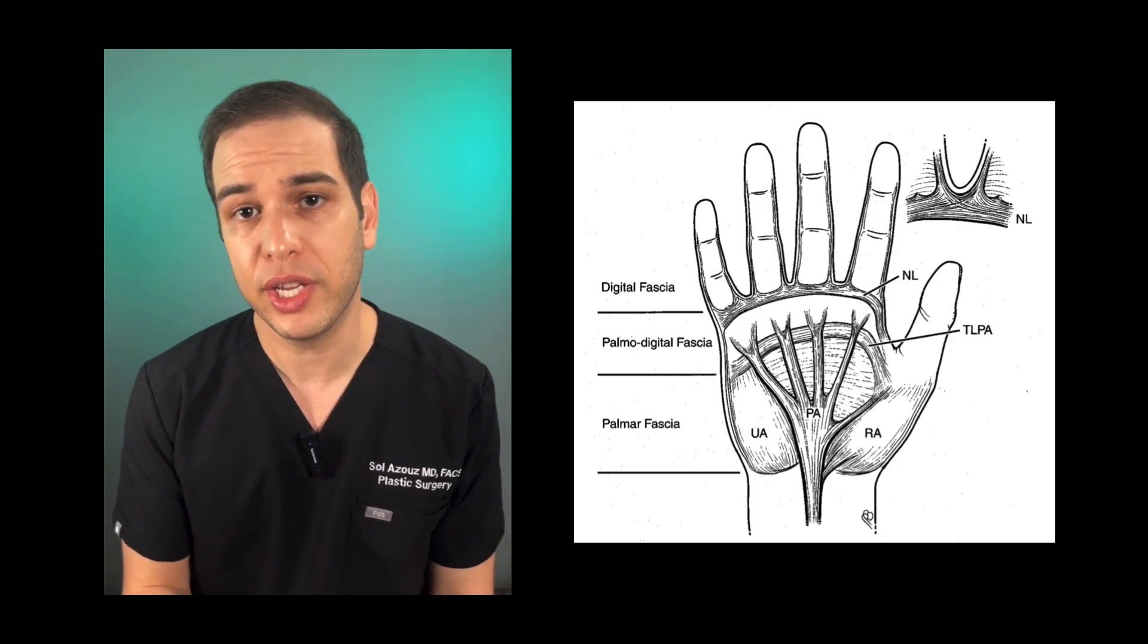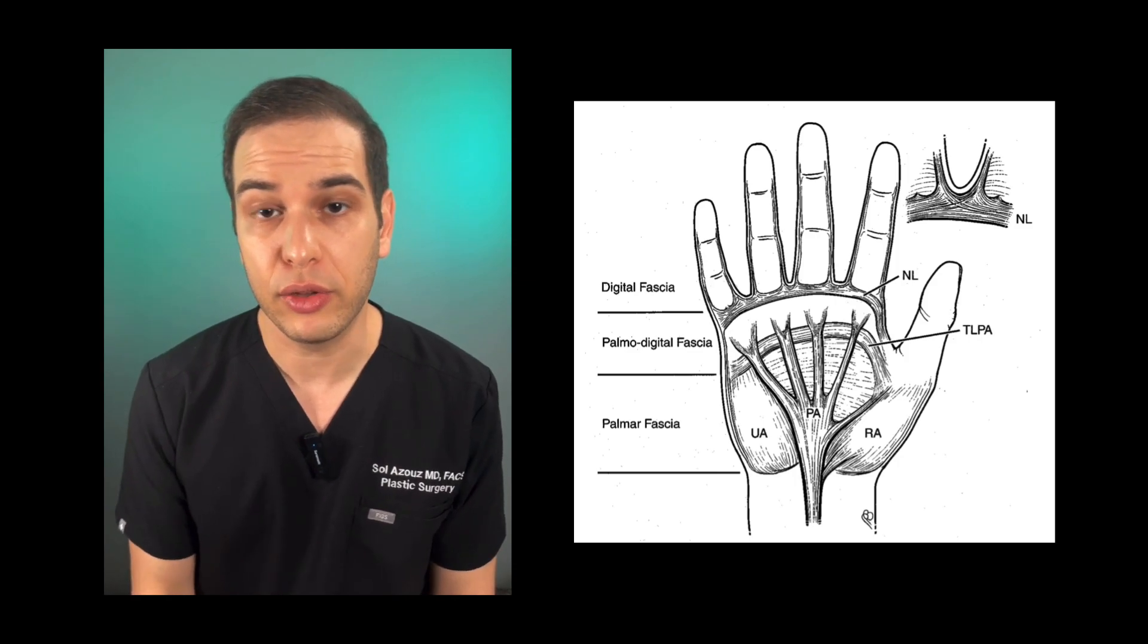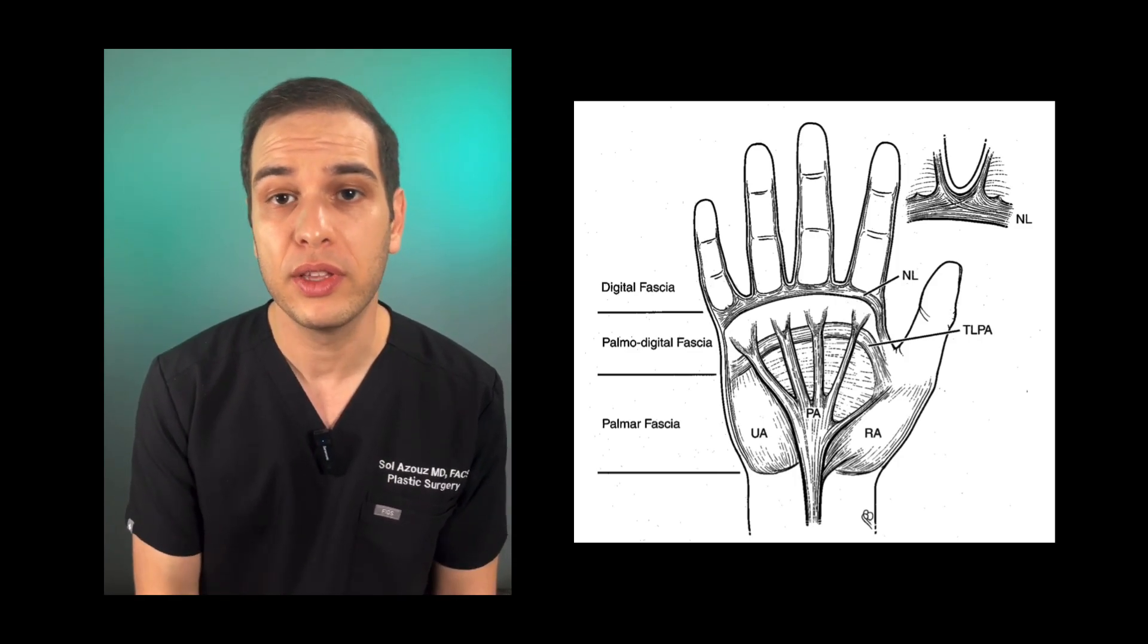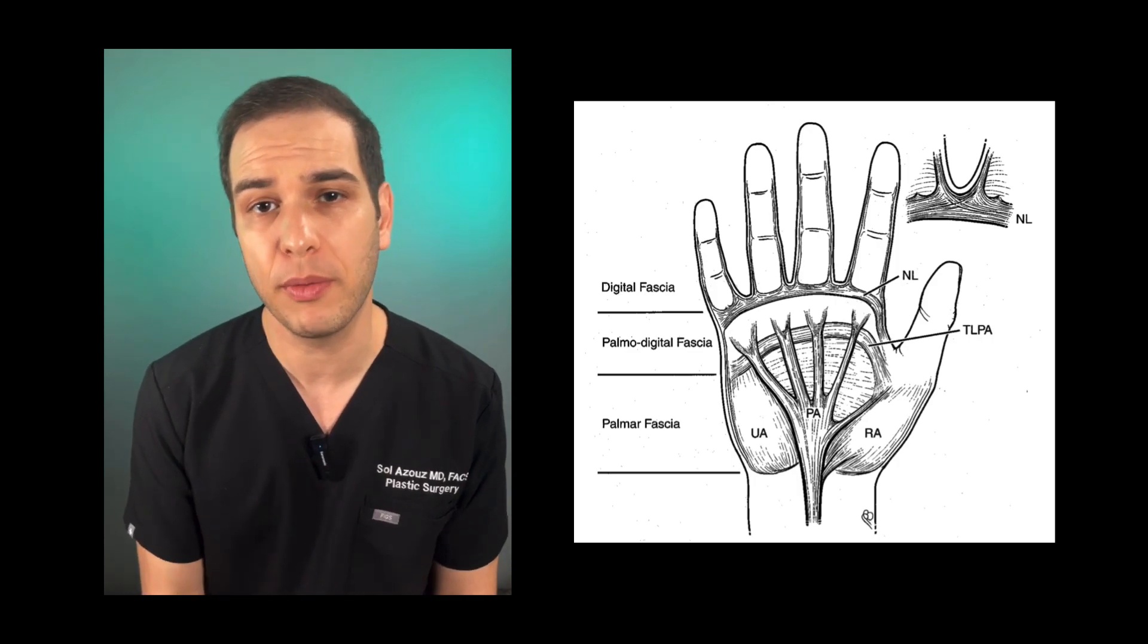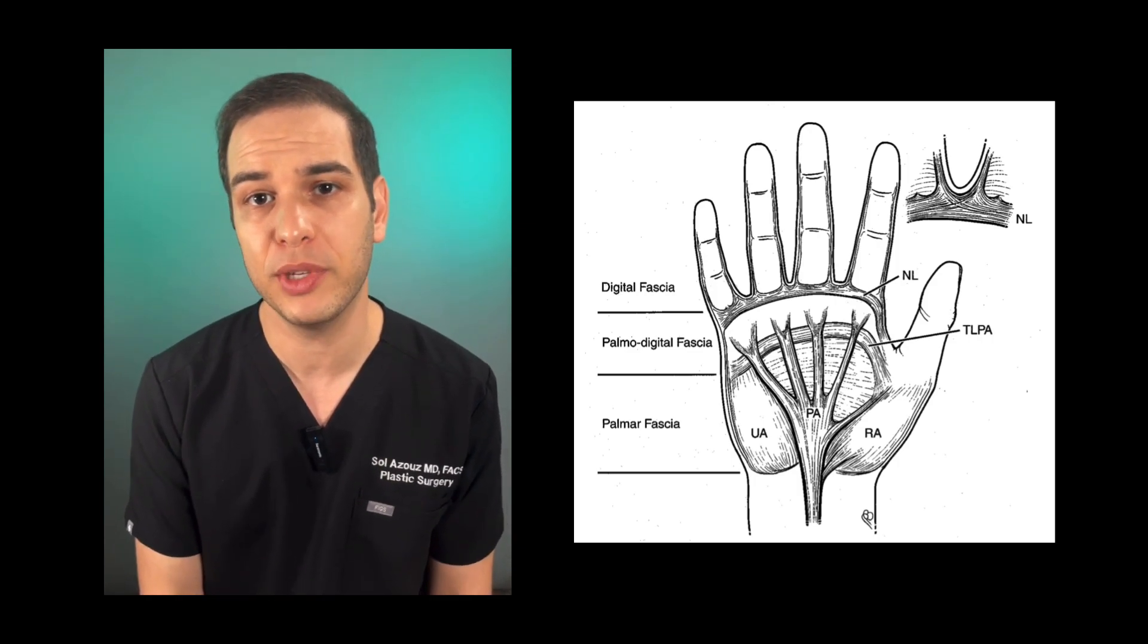Non-surgical methods of treating Dupuytren's contracture include an injection with collagenase, which ruptures the scar tissue so that the finger can be straightened out.